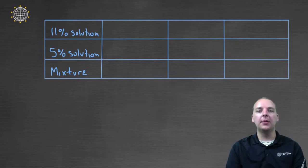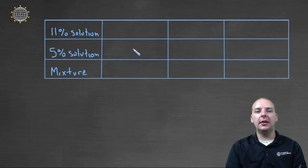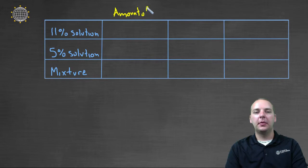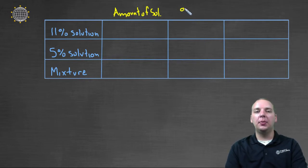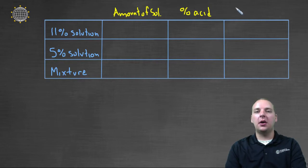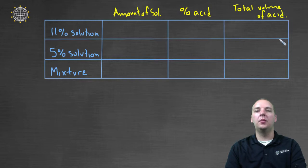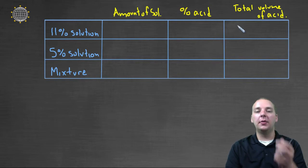Let's look at this chart. The first column will just have labels. The second column will have the amount of solution — the total amount of solution, nothing to do with the amount of acid. The third column will have the percentage of acid in each solution. And the last column will have the total volume of acid, because we can take a percentage of the total amount of solution to get the volume of just the acid.